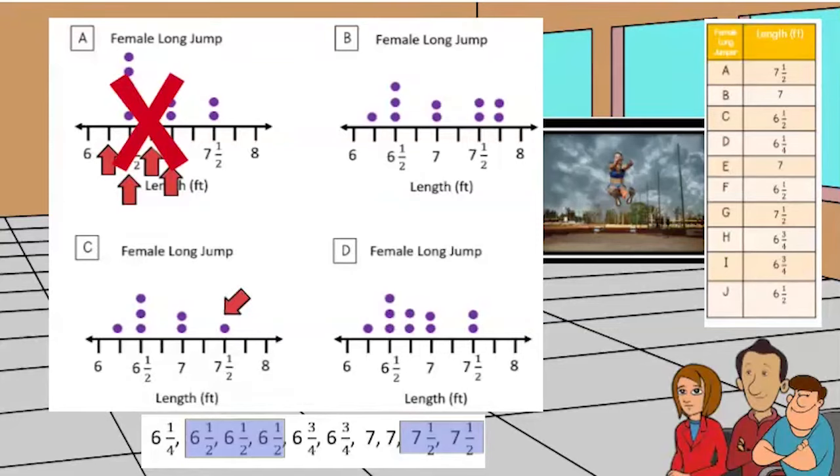Also, this chart looks like it is missing some information. There should be ten points and there is only seven points. Cross out C.